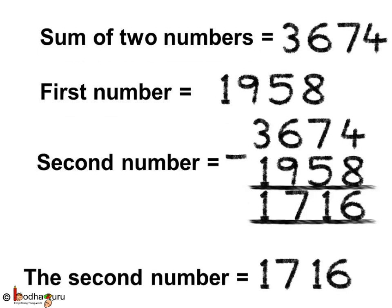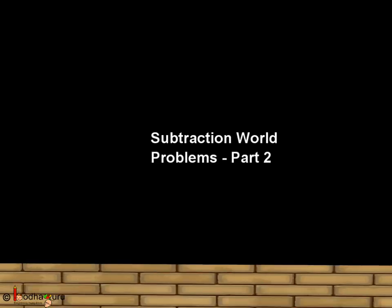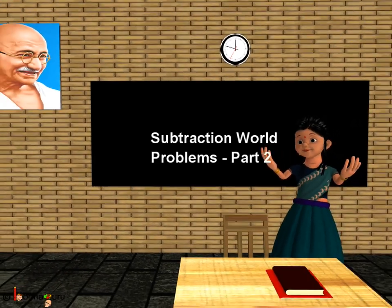Let us see again how we solve this problem. The sum of two numbers is 3,674. The first number is 1,958. Then, the other number is 3,674 minus 1,958, which is equal to 1,716. Thus, the other number is 1,716. That's all for now. Bye bye, children.